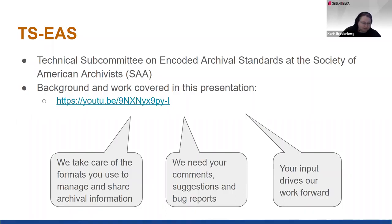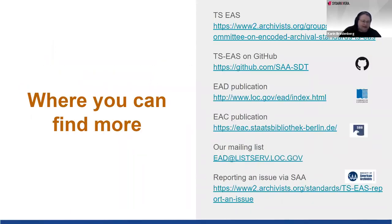We are available in a lot of places. We have one page for the whole committee, and we are maintaining the standards on GitHub. We also have publications of both the EAD tag library schema and the EAC tag library schema. All of these links will be available in the final materials. We have one mailing list for all the standards we are working with — that's the EAD mailing list at the Library of Congress. And besides using GitHub, we have a form where you can report an issue.